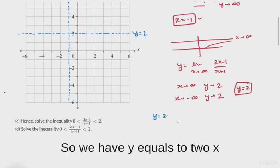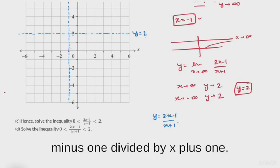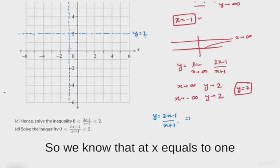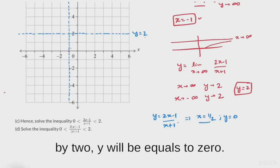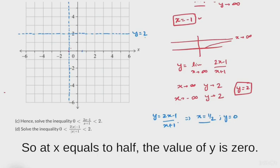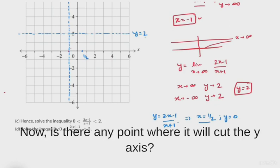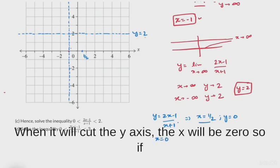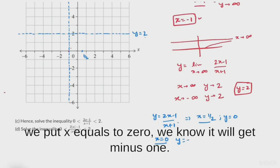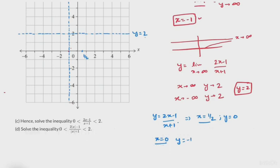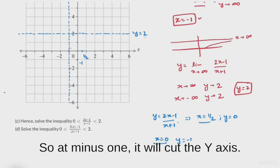We have y = (2x - 1)/(x + 1). At x = 1/2, y equals 0, so the graph crosses the x-axis at x = 1/2. For the y-intercept, when x = 0, the value is -1. So the graph cuts the y-axis at y = -1.